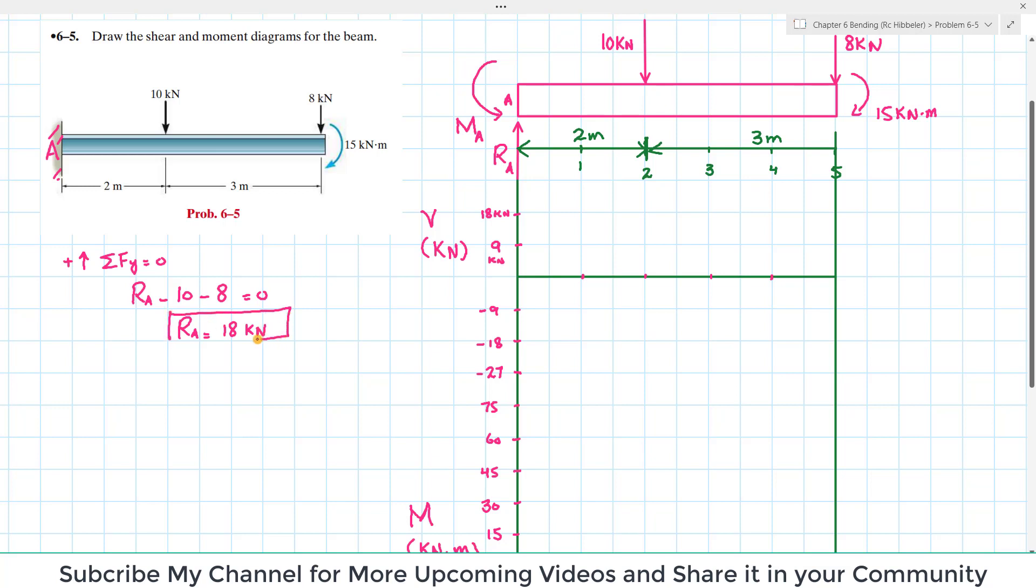Apply another equilibrium condition: sum of all moments about point A equals zero, taking counterclockwise moment as positive. MA minus 10 into 2 minus 8 into 5 minus 15 equals zero. When you calculate, moment about point A equals 75 kN·m.